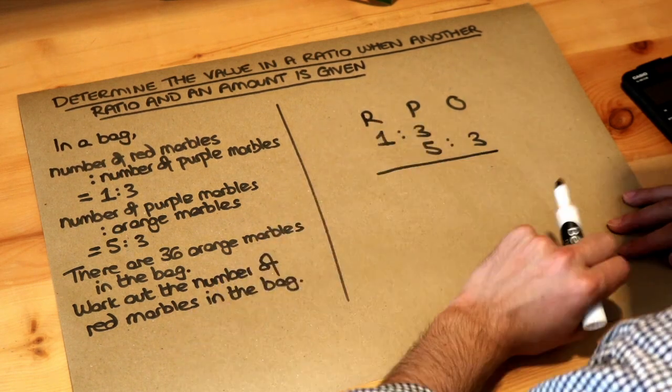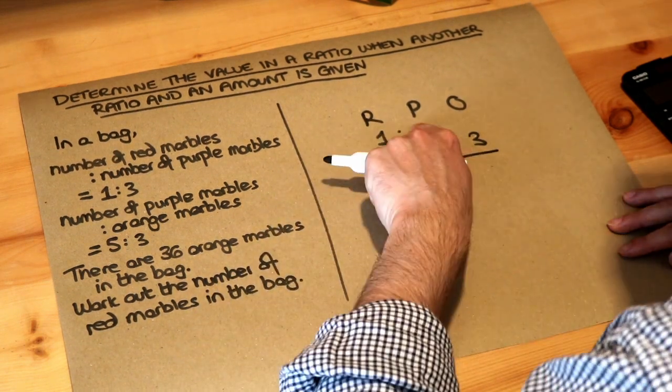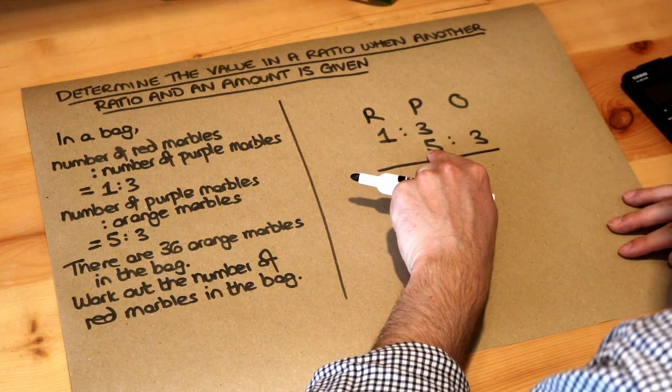Remember these parts have to be the same in order to combine into one. So three and five, what they both go into, they both go into 15.